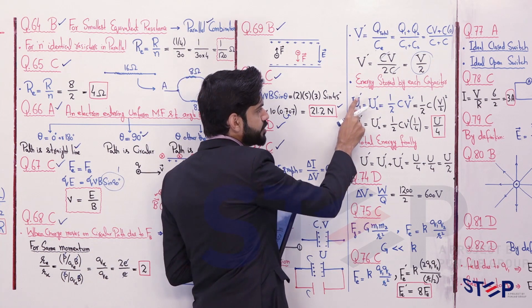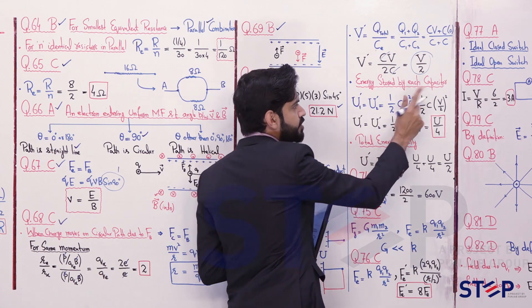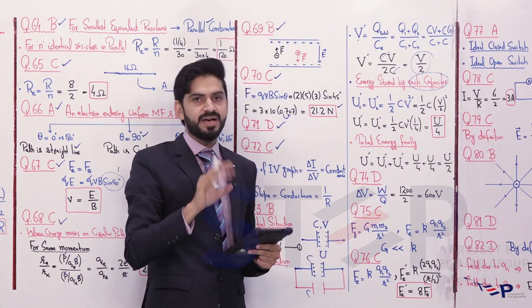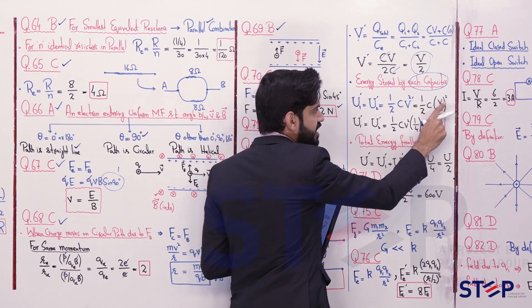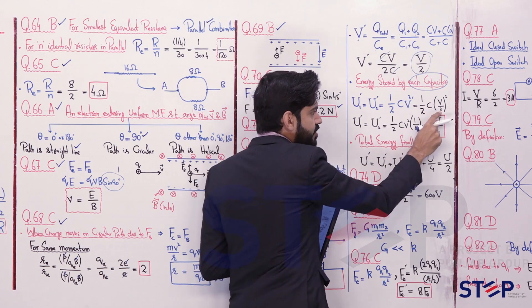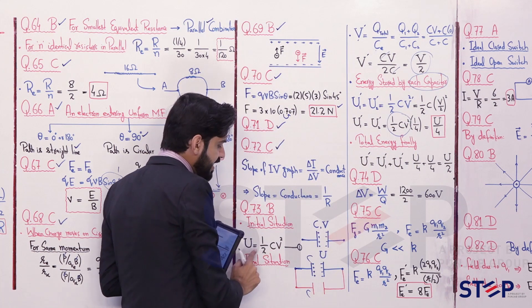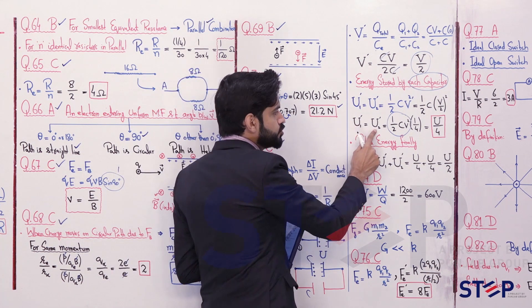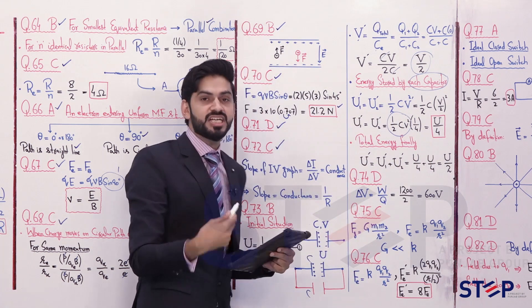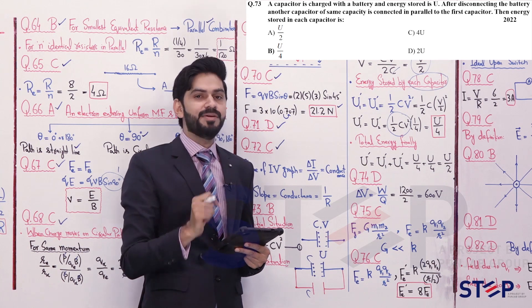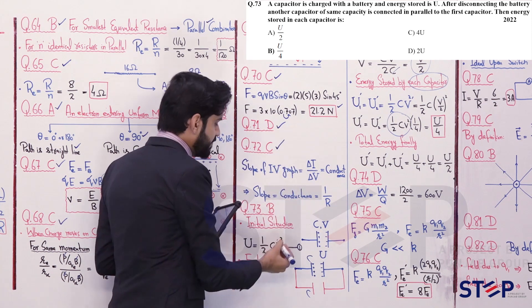Since ½CV² = U (initial energy), each capacitor stores U/4. So U1' = U2' = U/4. Question 73 asks for energy stored in each capacitor after connection — the answer is U/4, which is option B.